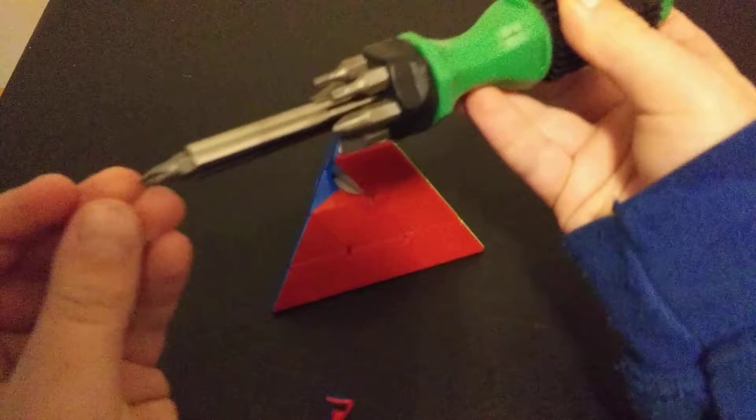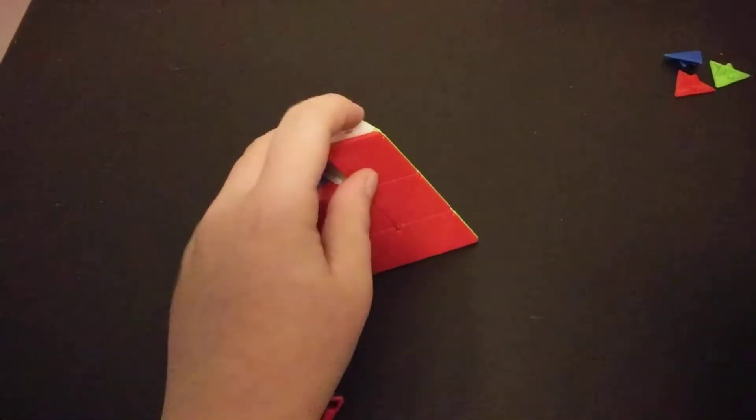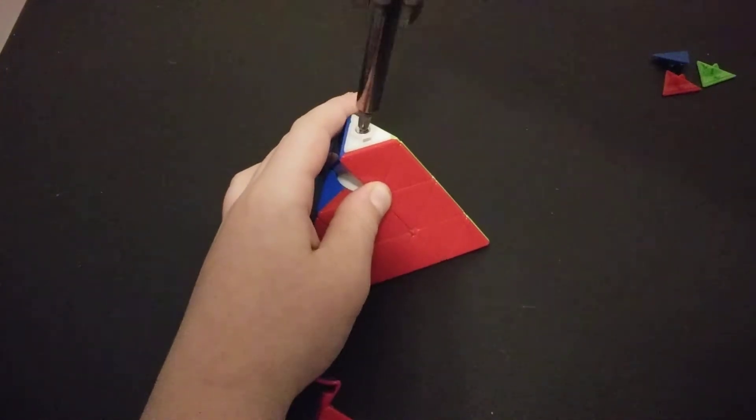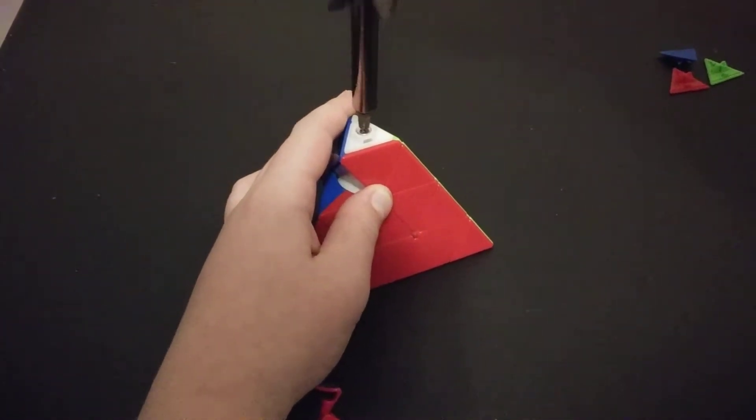And what we can do now is take our screwdriver with a Phillips head in it or whatever head, whatever you need for your screw. And we're just going to loosen the screw until it kind of sticks out of the cube.